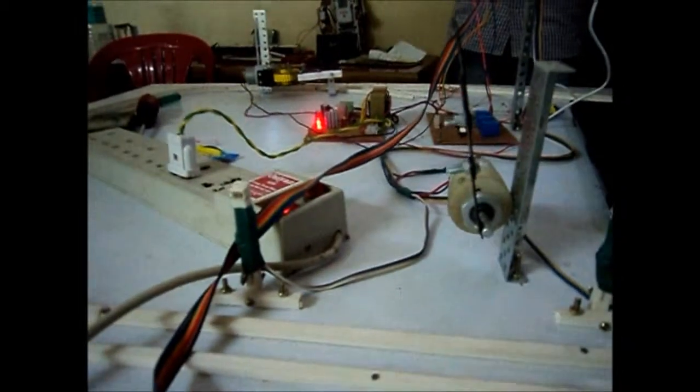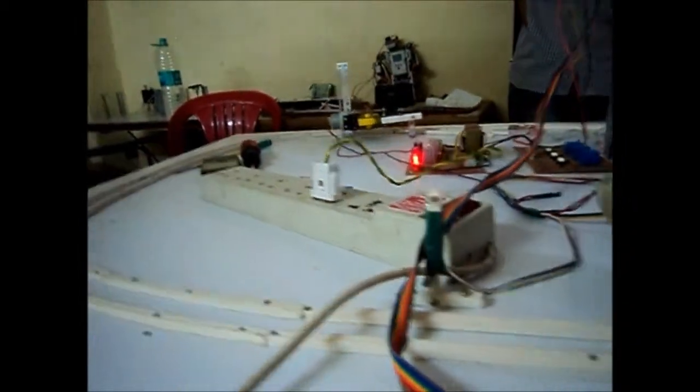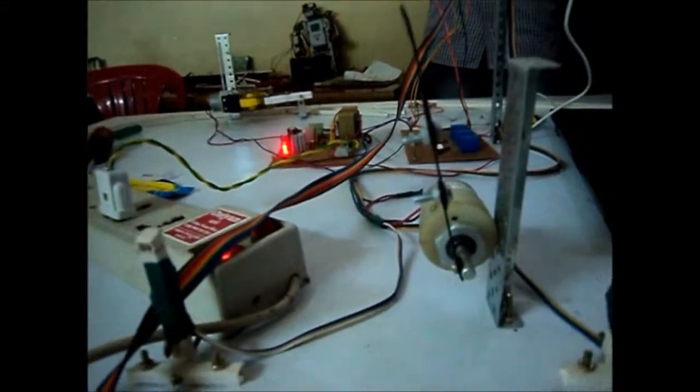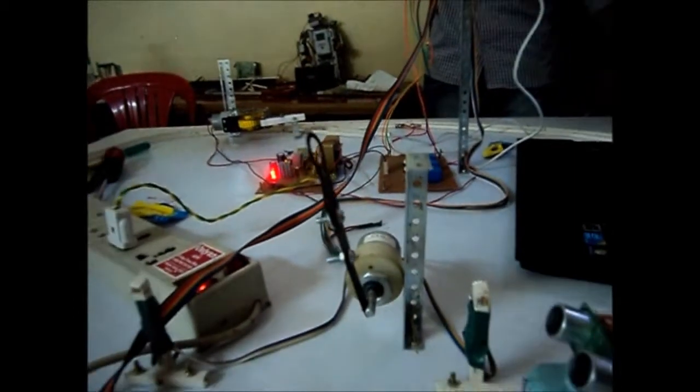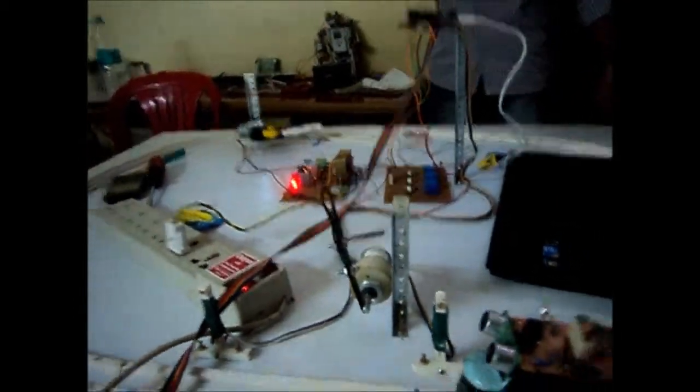And when the train crosses the second gate, under that situation the motor is going to again move in the reverse direction and it's going to open the gate.